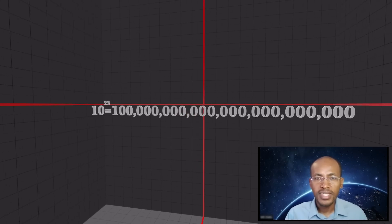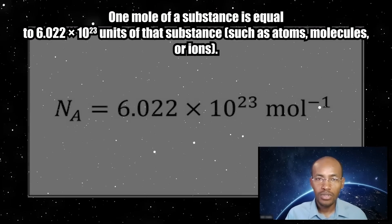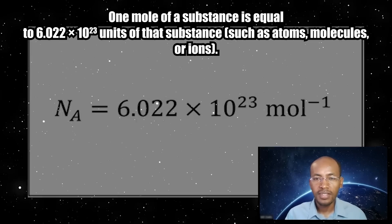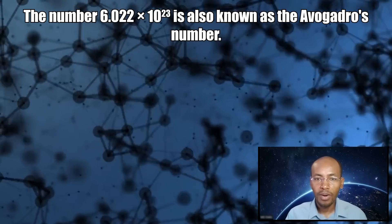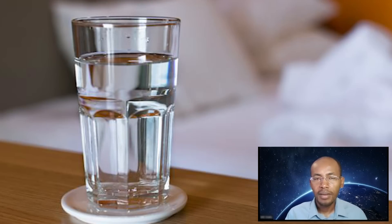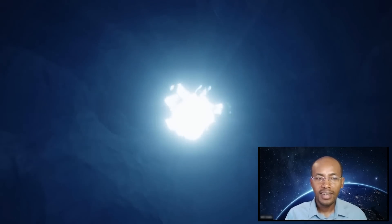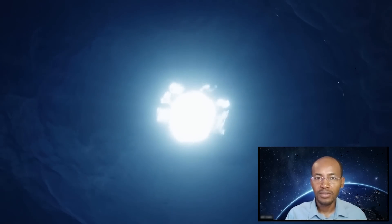Next up is 10 to the 23rd power, or 1 plus 23 zeros. If you remember chemistry class, one mole of a substance is equal to 6.022 × 10²³ units — this is Avogadro's number. This means there are more molecules of water inside a glass of water than there are glasses of water in all the oceans of our planet. By drinking a glass of water, when it comes out through spitting, sweating, or going to the restroom, we put some of those water molecules right back into the environment.